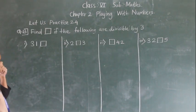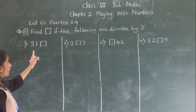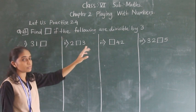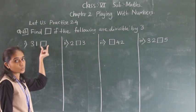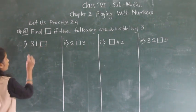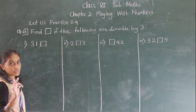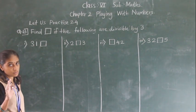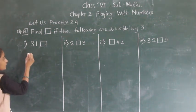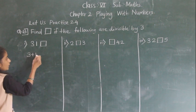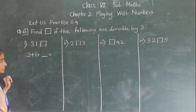Find the value of the square if the following are divisible by 3. In the place of this square, which number will come? First we will see: what is the divisibility test of 3? The sum of the digits must be divisible by 3. So, 3 plus 1 plus which number comes here — that sum must be divisible by 3.